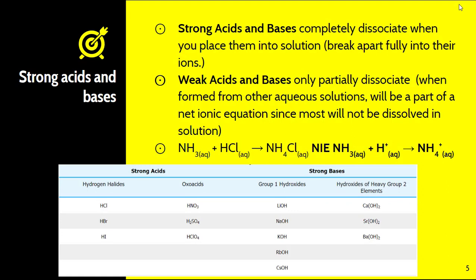Something that's really important especially when we're looking at net ionic equations is whether you're looking at a strong acid or base or a weak acid or base. Your strong acids or bases completely dissociate when you place them into solution. They break apart fully into their ions. Think of them almost like an ionic substance. Ionic substances completely dissociate into their positive and negative ions. Strong acids and bases are going to do the exact same thing.